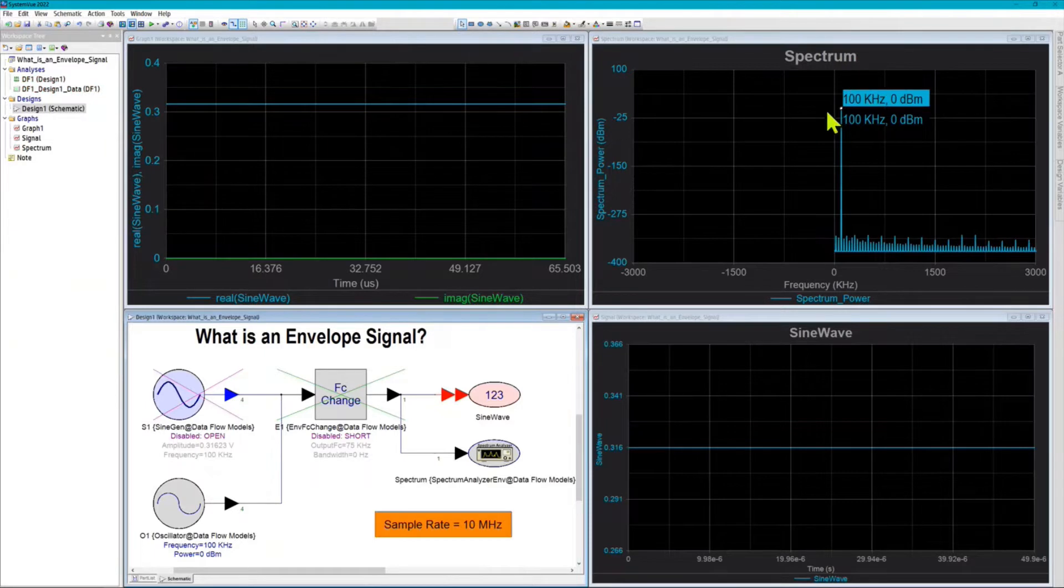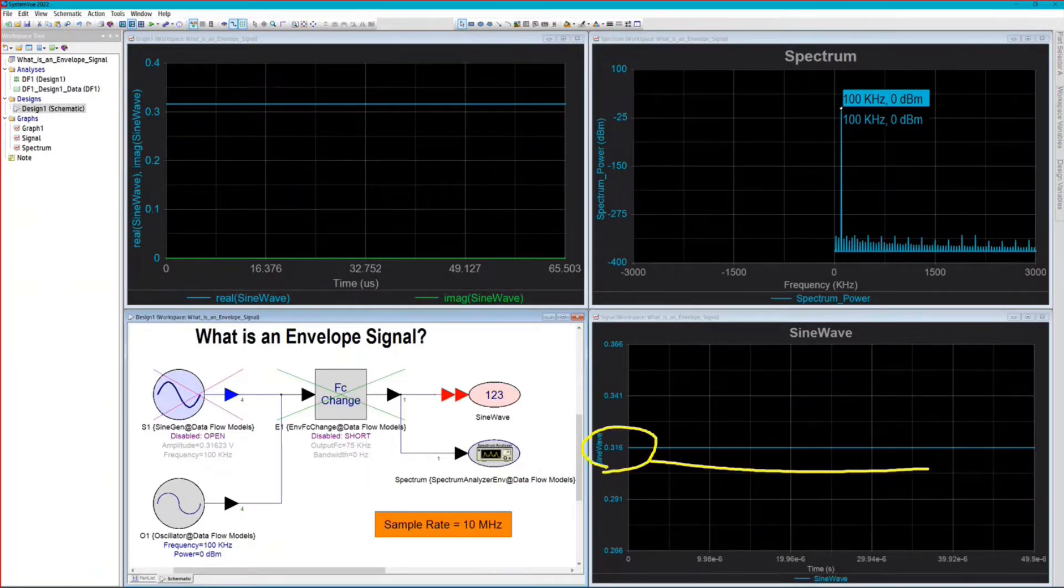The spectrum still shows 100 kilohertz. It doesn't show negative frequency anymore because of the spectrum analyzer, but the sine wave is just a flat line at 0.316 volts. That amplitude is correct for an oscillator at 0 dBm here on the schematic. So why is it a flat line?